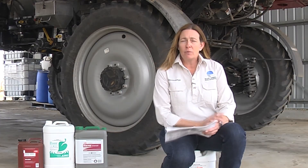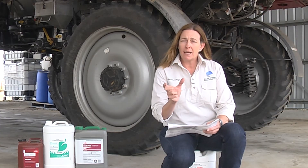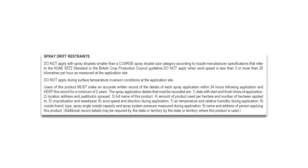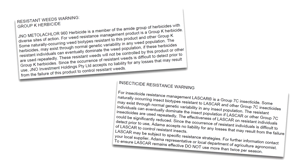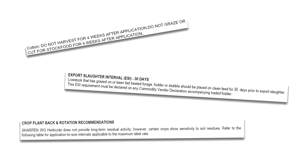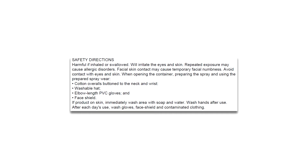I often see people not checking the rates, and sometimes those rates may change if product labels are updated. The booklet also covers equipment to be used or not to be used, spray qualities, spray drift restraints, and resistance warnings. There could also be information about withholding periods, export slaughter intervals, and plant back periods. There's also information on safety and PPE.